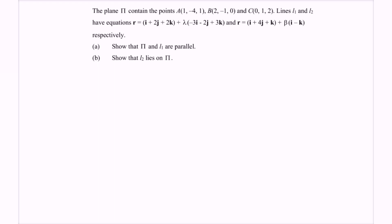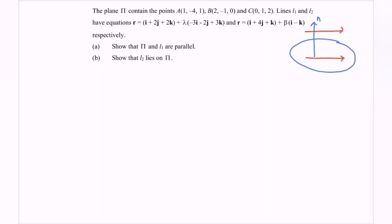Show that plane π and line L1 are parallel. Imagine the situation — here we have the plane, and as we know the plane has a normal. Now imagine the situation for line L1. If the line is parallel to the plane, it means the line is perpendicular to the normal.